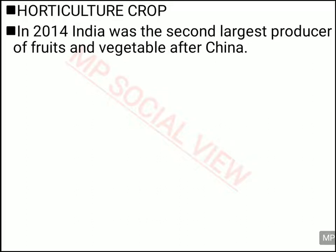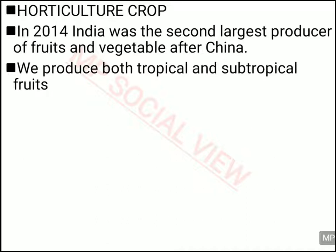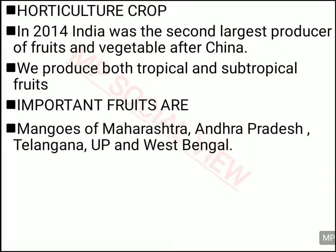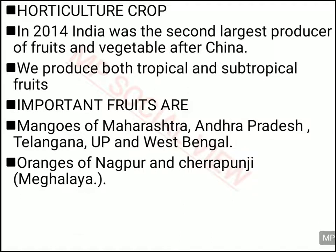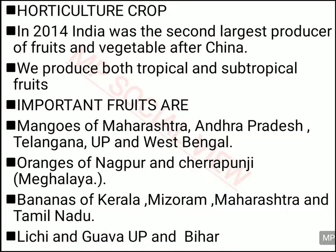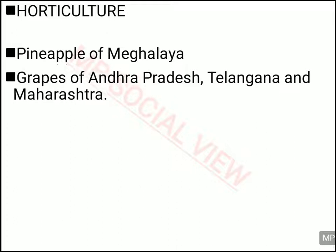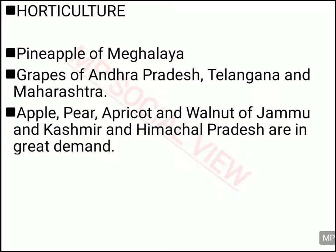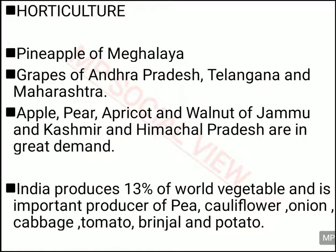Now let us discuss about horticulture, in which we grow fruits and vegetable plants. In 2014, India was the second largest producer of fruits and vegetables after China. We have both tropical and subtropical varieties. States famous for fruit production include mangoes of Maharashtra, Andhra Pradesh, Telangana, UP and West Bengal; oranges of Nagpur and Cherrapunji in Meghalaya; banana of Kerala, Mizoram, Maharashtra and Tamil Nadu; lychee and guava of UP and Bihar; pineapple of Meghalaya; grapes of Andhra Pradesh, Telangana and Maharashtra; and apple, pear, apricot and walnut of Jammu & Kashmir and Himachal Pradesh. We also produce vegetables like pea, cauliflower, onion, cabbage, tomato, brinjal and potato — producing about 13% of the world's total vegetables.